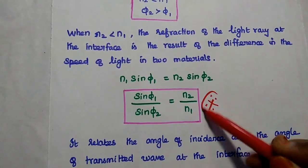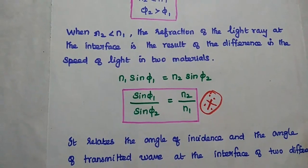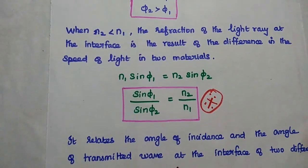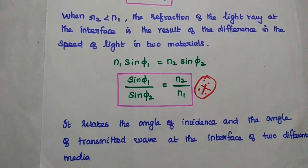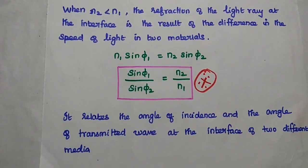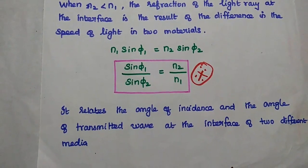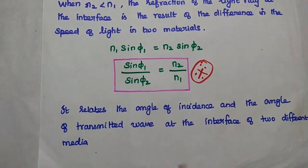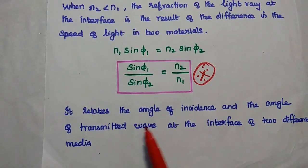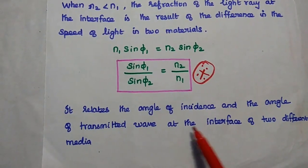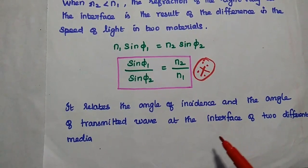This is called Snell's law, where sin phi 1 by sin phi 2 is equal to n2 by n1. It relates the angle of incidence and the angle of refraction. The refracted wave is also known as the transmitted wave at the interface of two different media.